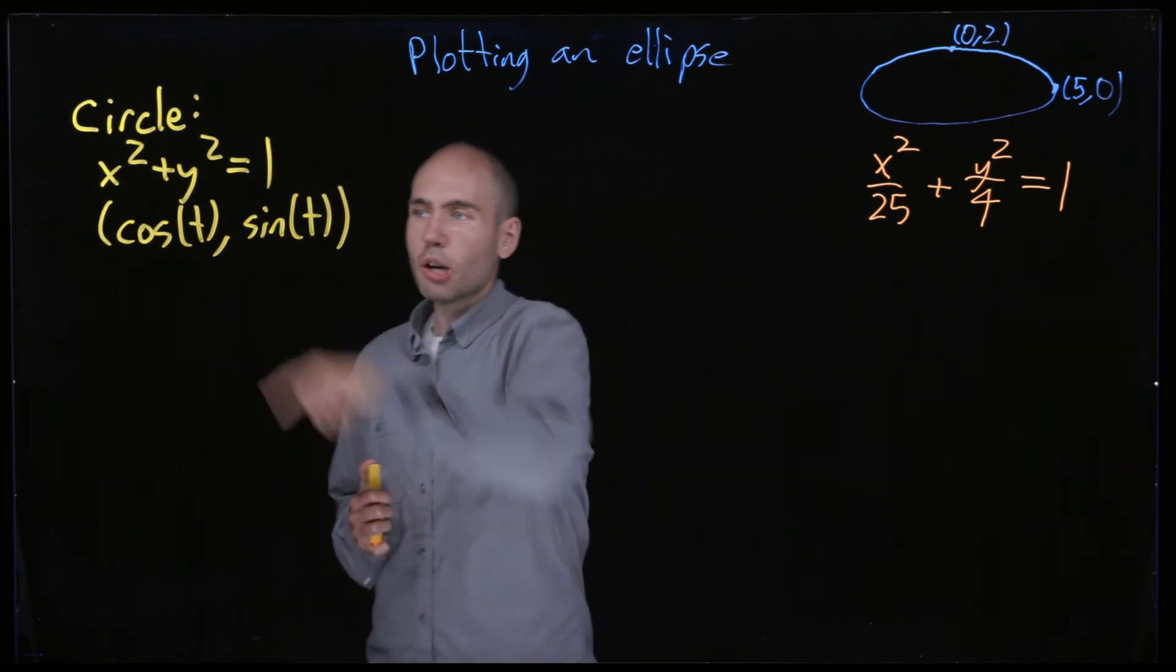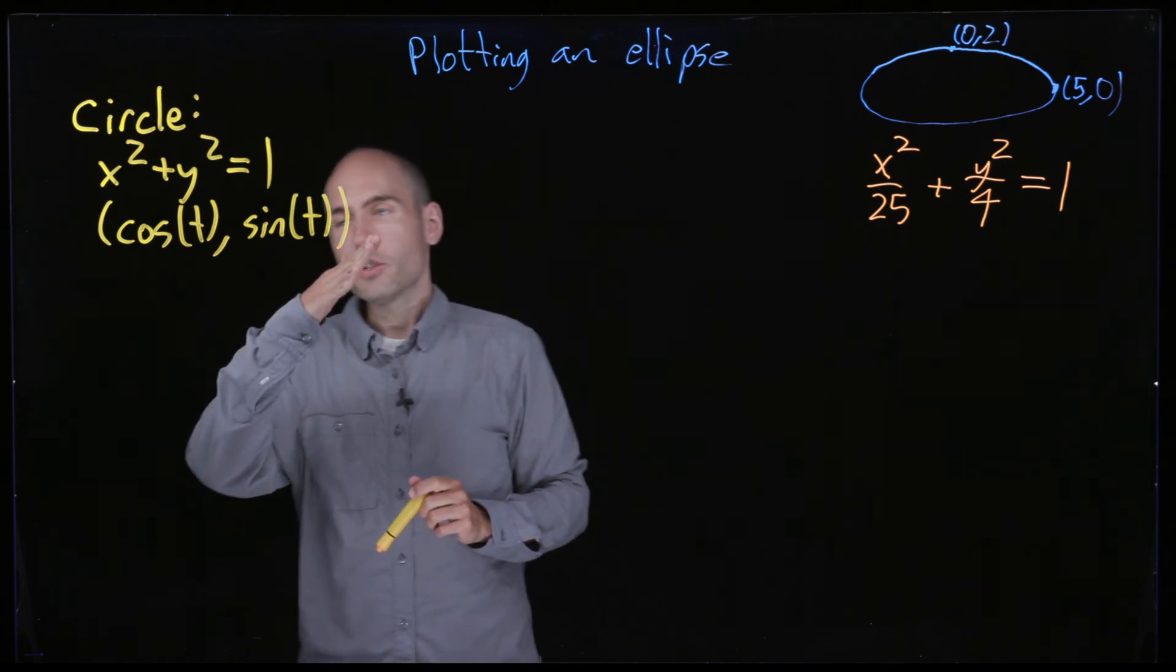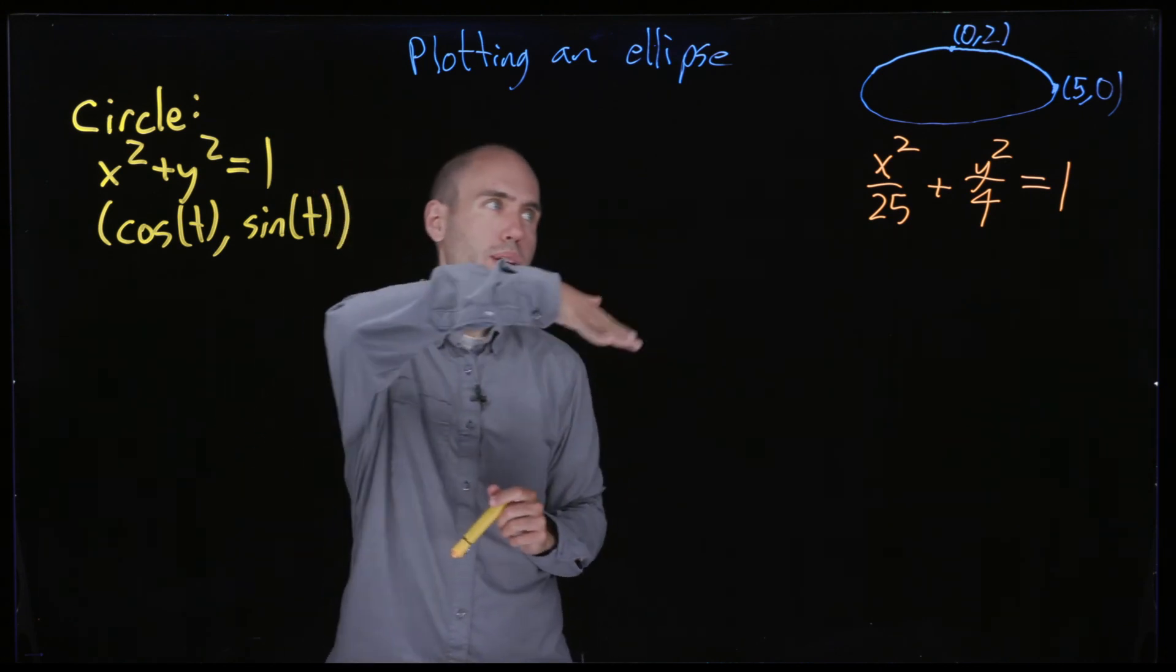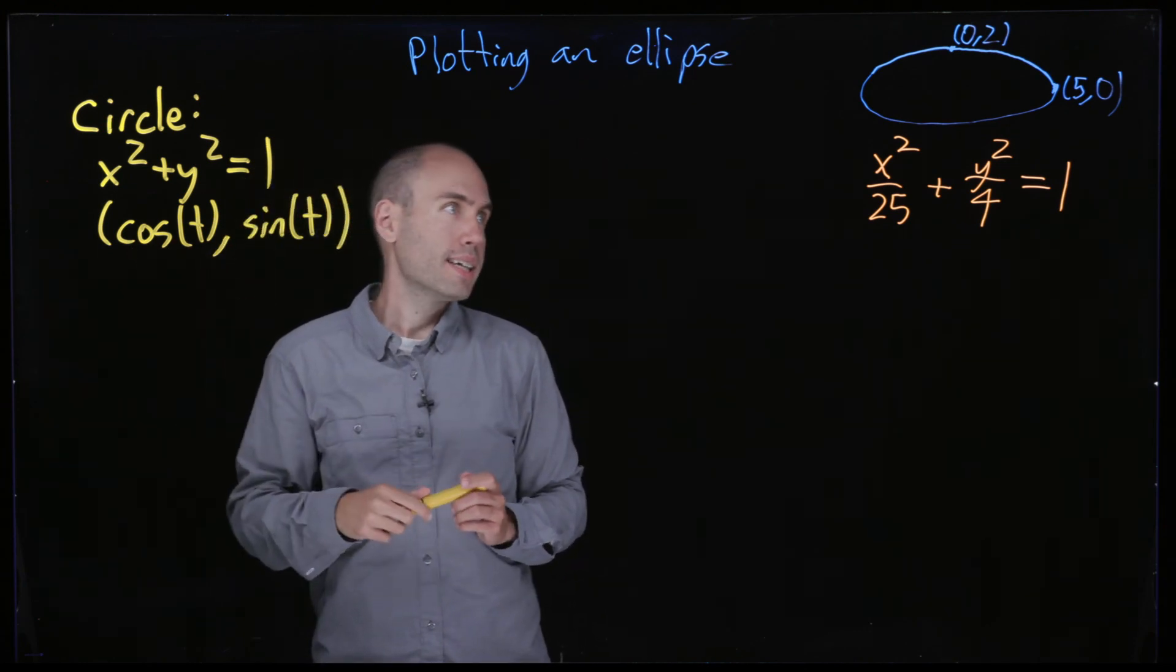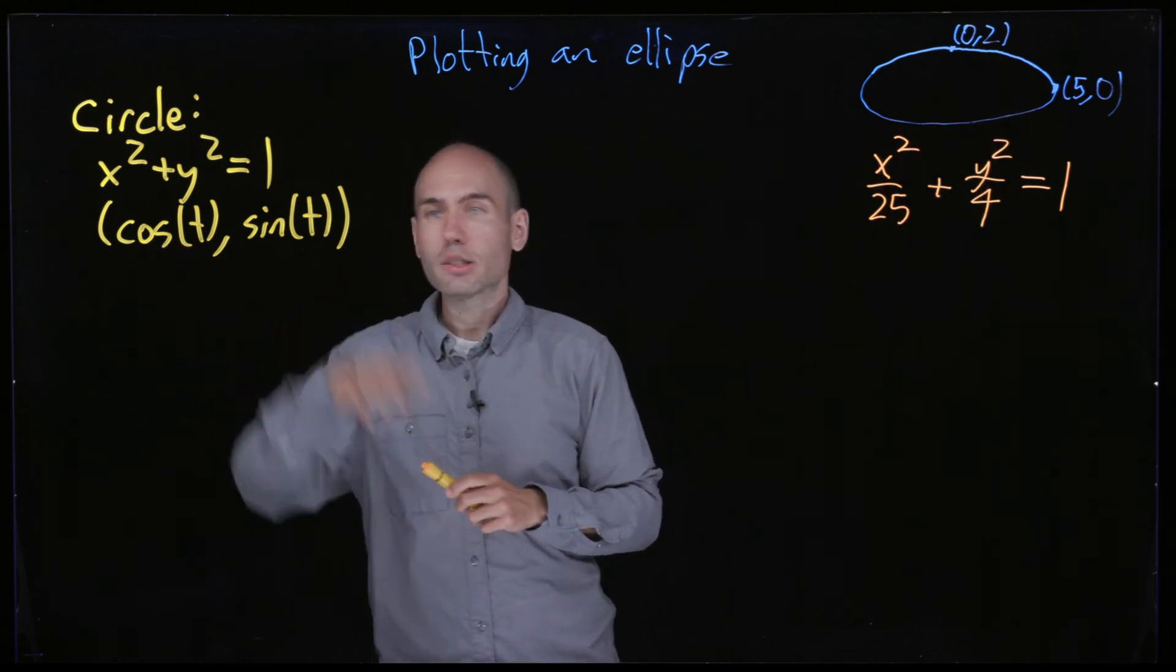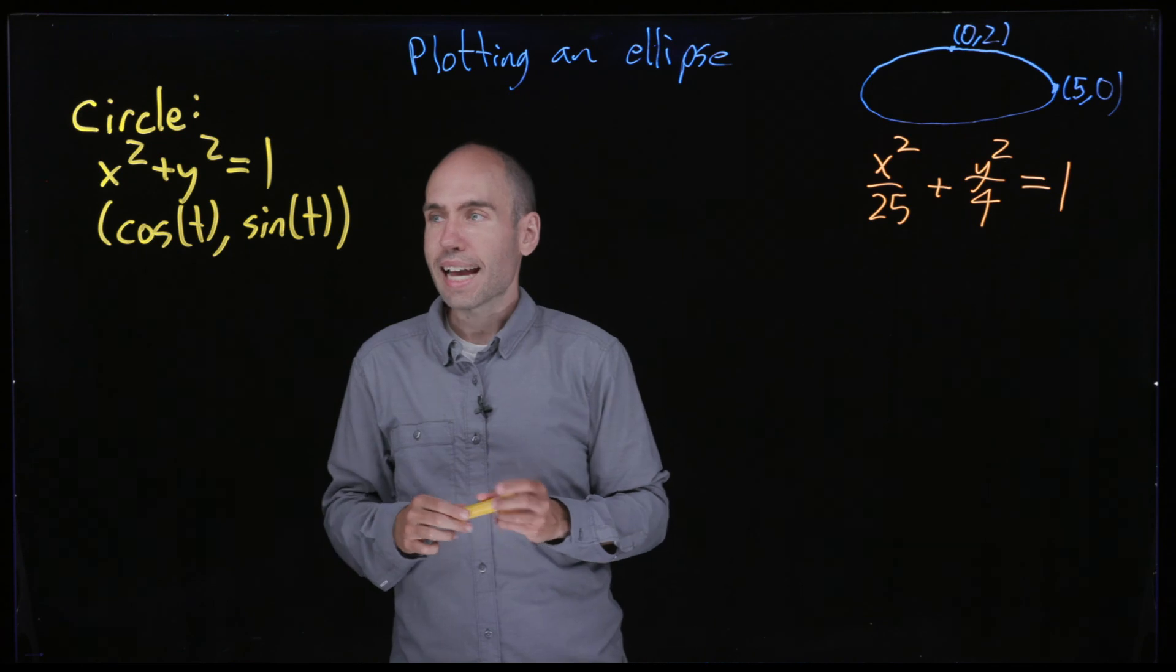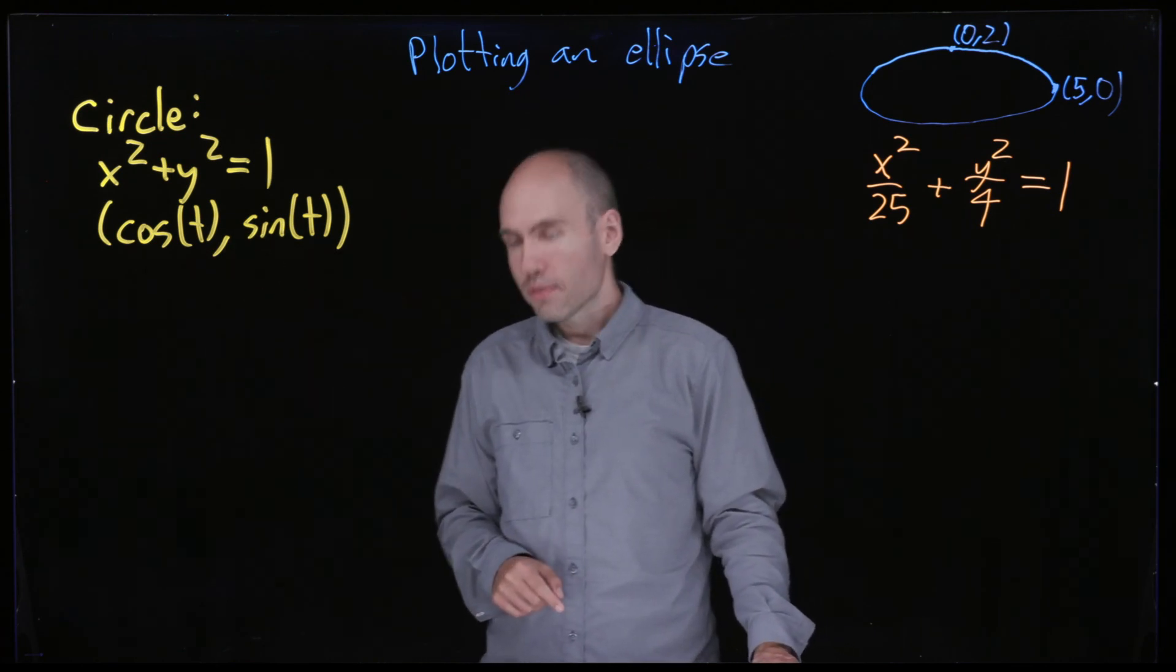In my mind this is almost the definition of cosine and sine. It says if I give you the angle in radians with the positive x-axis, what is the corresponding point on the circle, and its x coordinate is cosine t and its y coordinate is sine t. So that's what's called a parametrization of the circle.